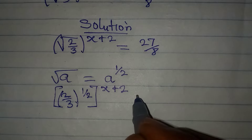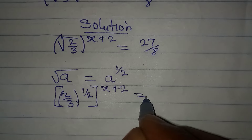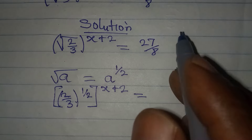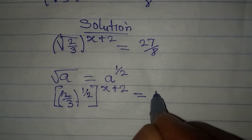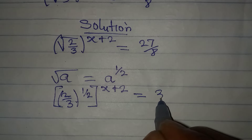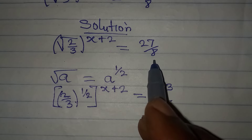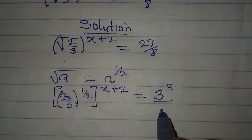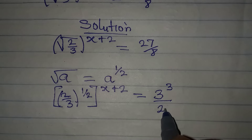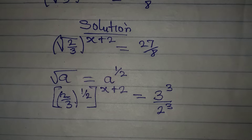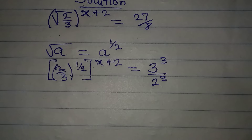This is equal to 27 over 8. Now, 27 is 3 to the power of 3, and 8 is 2 to the power of 3. From here we can see that both have the same power.